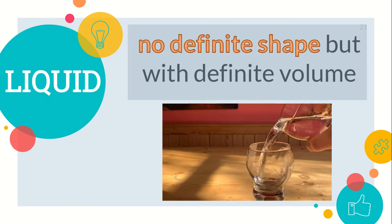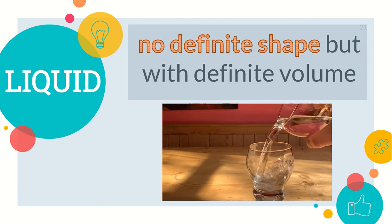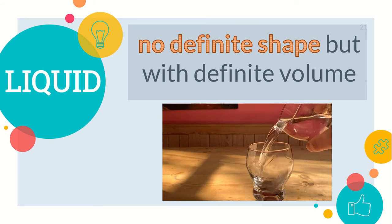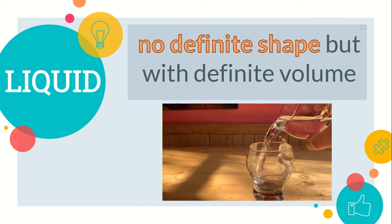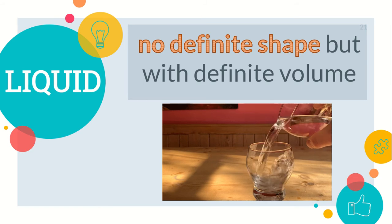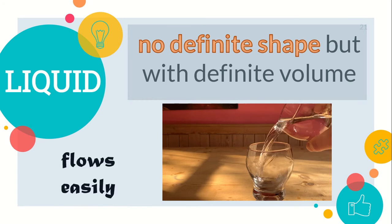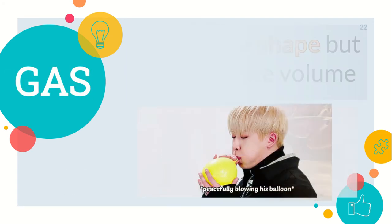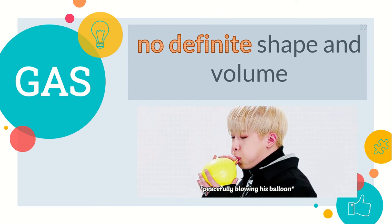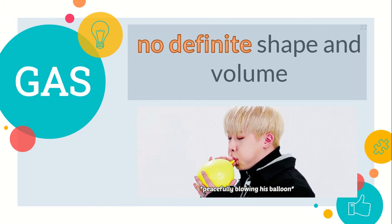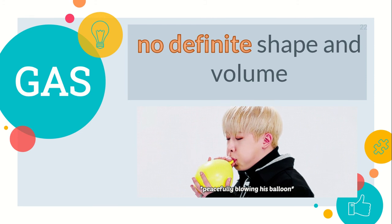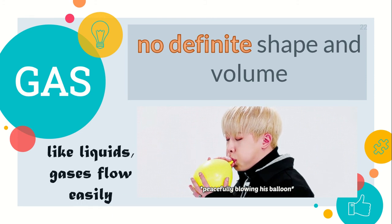Liquid, on the other hand, has no definite shape but has a definite volume. This means liquids take the shape of their container. Liquid has definite volume, meaning liquids do not change their volume even if transferred to another container. Liquids flow easily. And lastly, gas has no definite shape and volume — gases take the shape and volume of their container, and like liquids, gases flow easily.